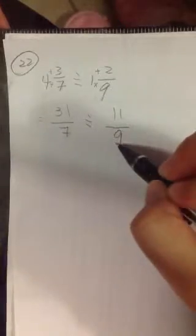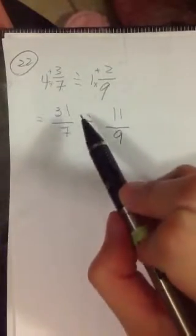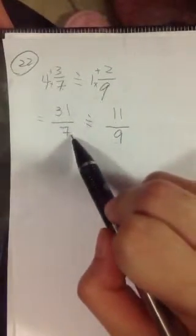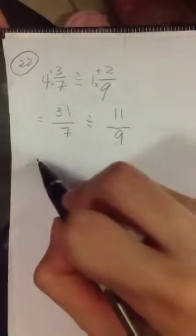So now we make both of them into improper fraction. Improper fraction is when the numerator is bigger than the denominator. So now we don't have any whole numbers outside. We can just do regular division for fractions.